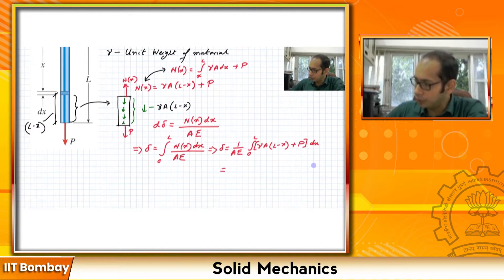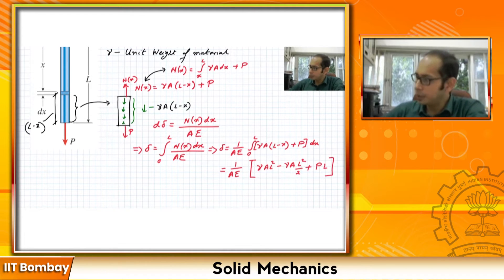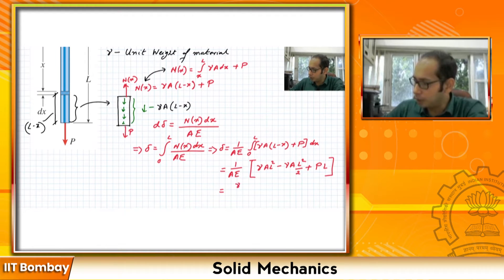Performing the integration: delta = (1/AE) · [gamma·A·L² − gamma·A·L²/2 + P·L]. Simplifying, with A canceling in the first term, we get delta = gamma·L²/(2E) + PL/(AE).